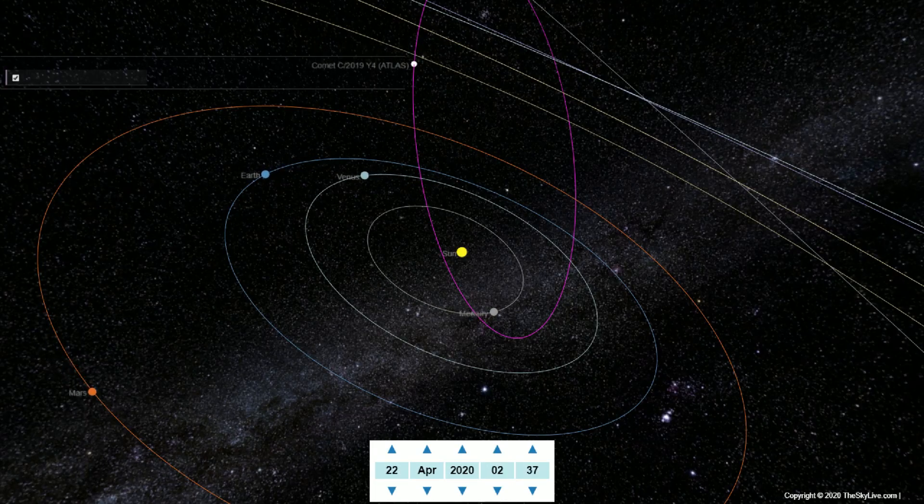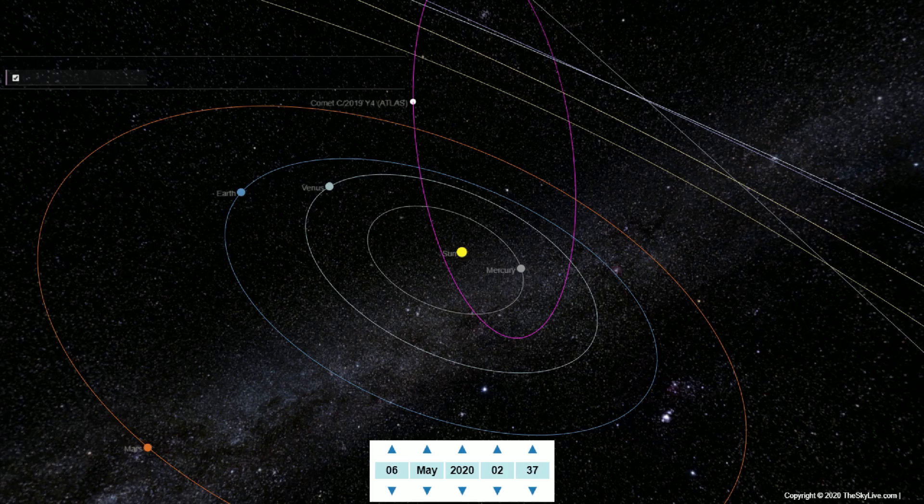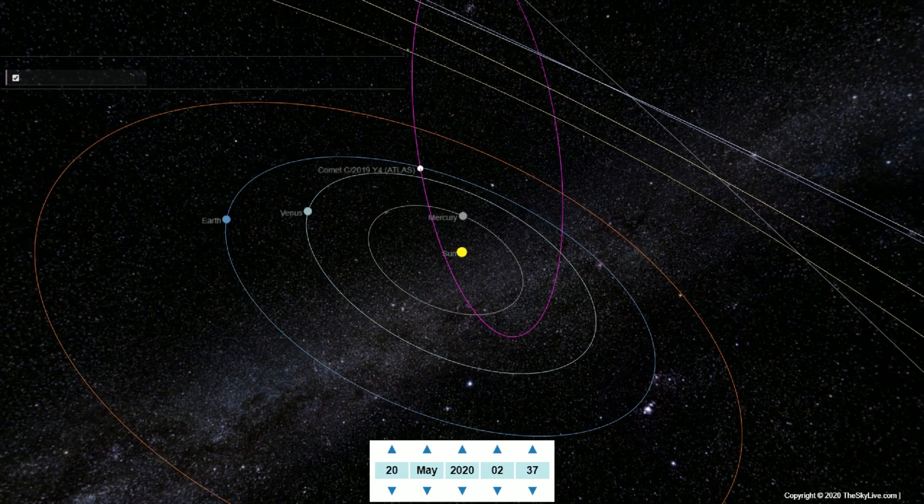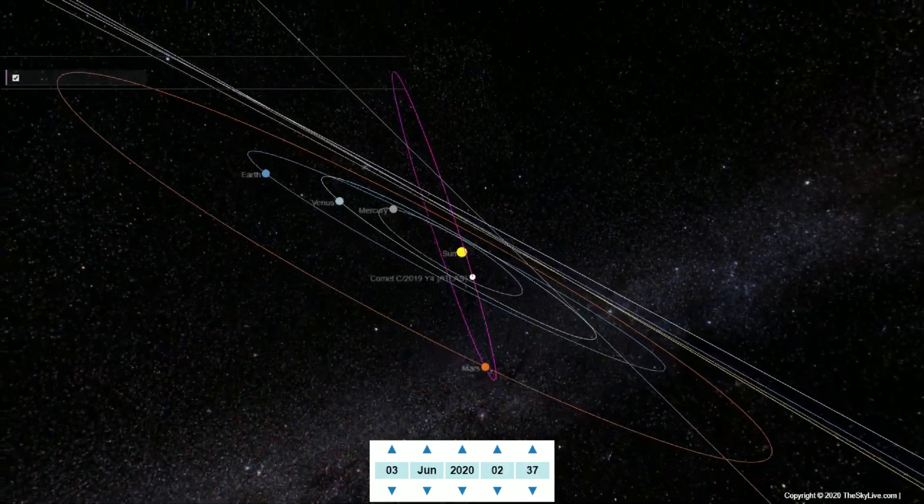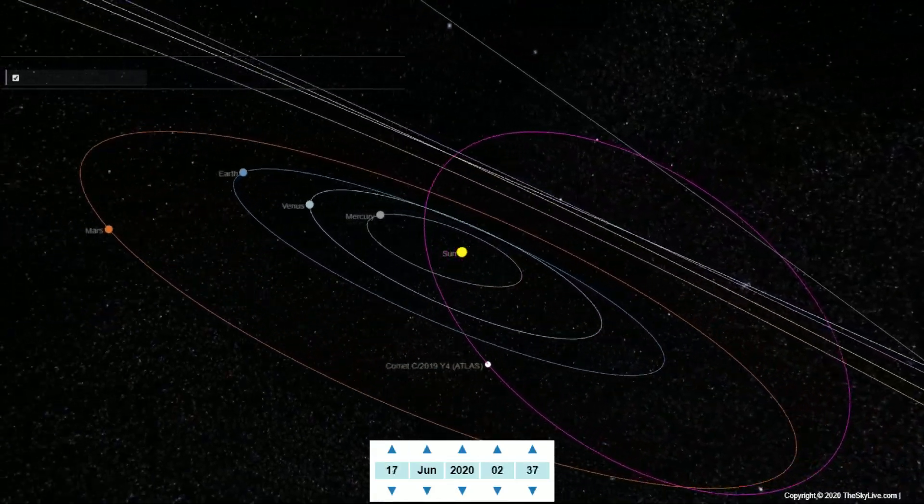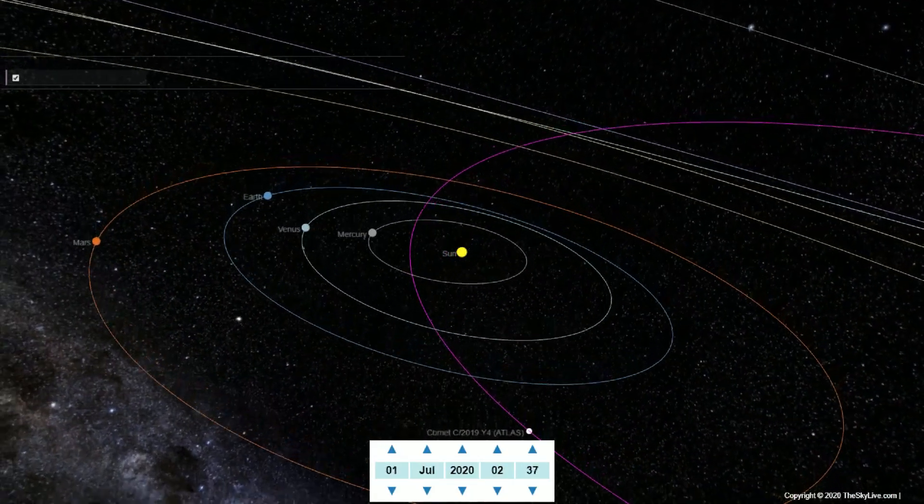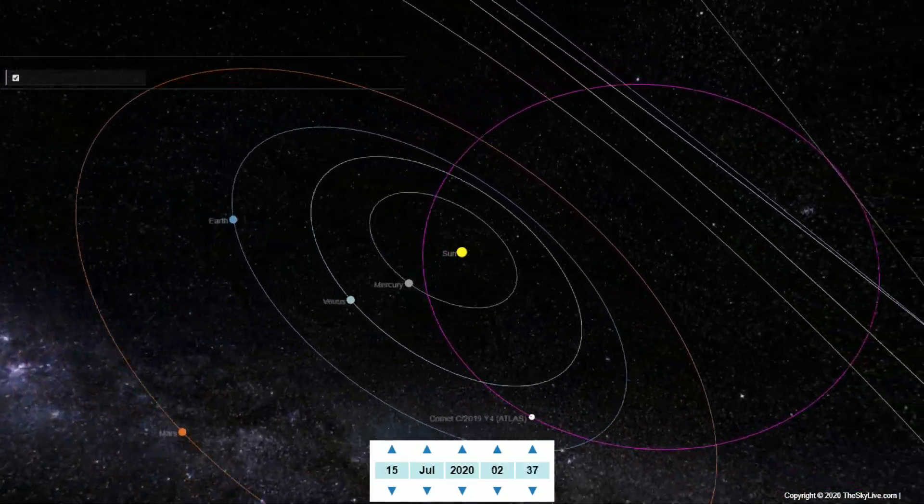Between the beginning of February and near the end of March, the comet brightened from magnitude 17 to magnitude 8, representing a 4,000-fold increase in brightness. In March 2020, the comet's brightness increased four magnitudes.